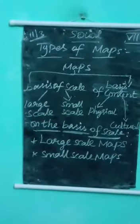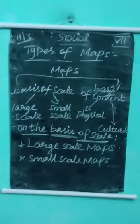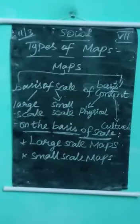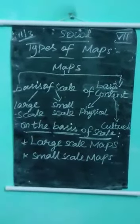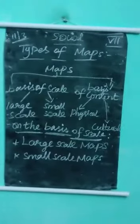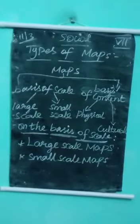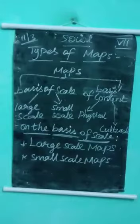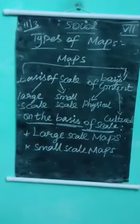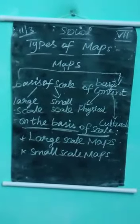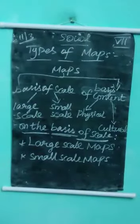Wall maps are small-scale maps showing large areas. They are hung on walls and are useful for students in the classroom and in offices. Wall maps cover a large area but with limited information.